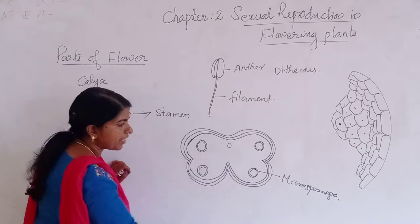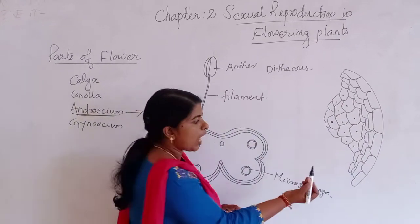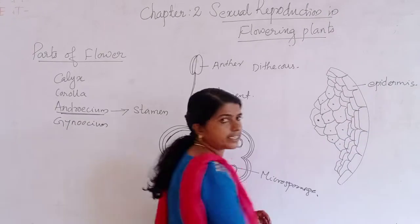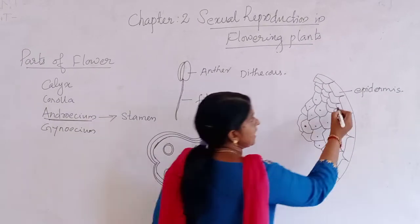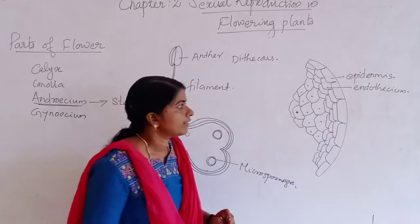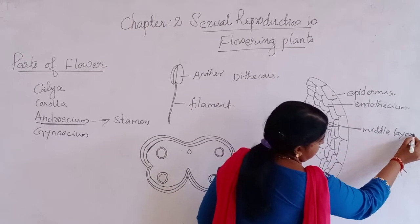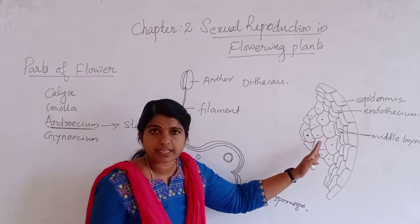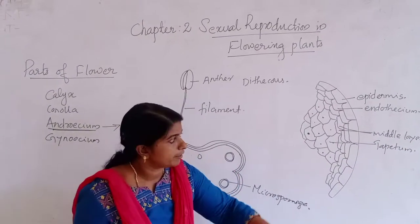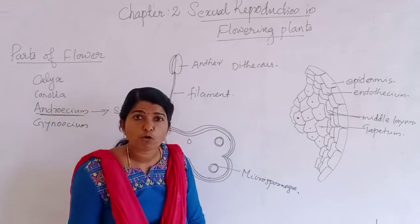The microsporangia is surrounded by four layers. In the diagram you can see it. The outer layer is known as epidermis. Just inside that is the endothecium. Then the next layer is known as the middle layers, and the innermost layer is known as the tapetum.